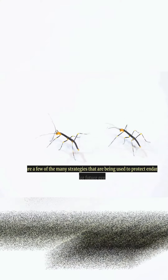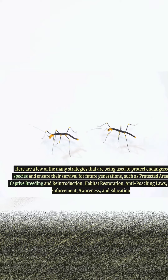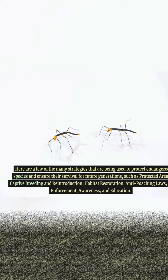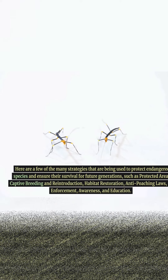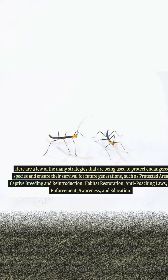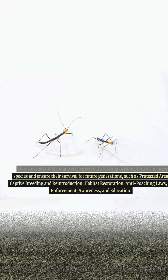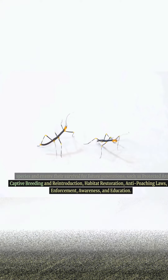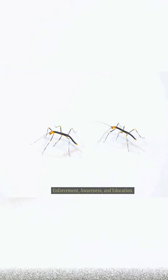Here are a few of the many strategies that are being used to protect endangered species and ensure their survival for future generations, such as protected areas, captive breeding and reintroduction, habitat restoration, anti-poaching laws and enforcement, awareness, and education.